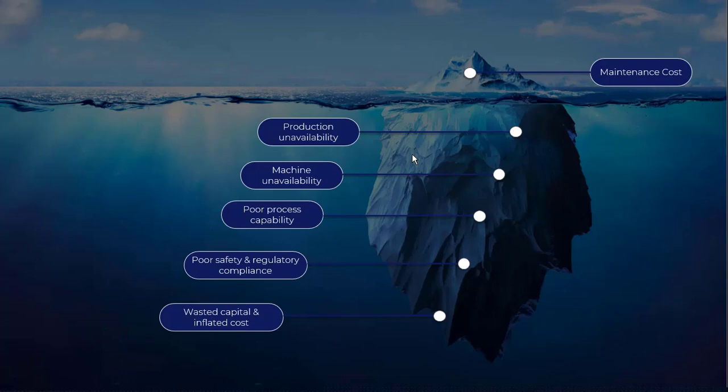Here we can see what we call the maintenance cost iceberg. The visible part above the water is always the maintenance cost, and this is why many companies or facilities have a poor maintenance process — because they focus on that visible part at the top of the water. However, what you don't see is the hidden part of that iceberg, which includes production unavailability, machine unavailability, poor process capability, poor safety and regulation compliance, and wasted capital and inflated costs. This is why, if you think about it, maintenance cost is actually an investment to increase the productivity and the profitability of the plant or facility.